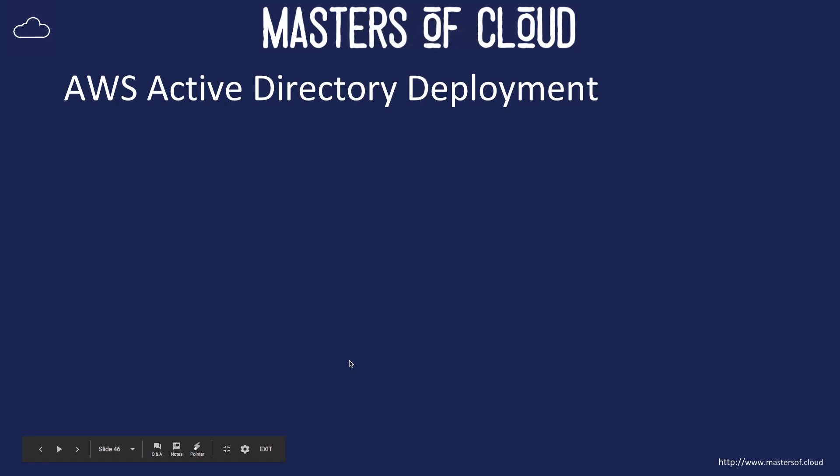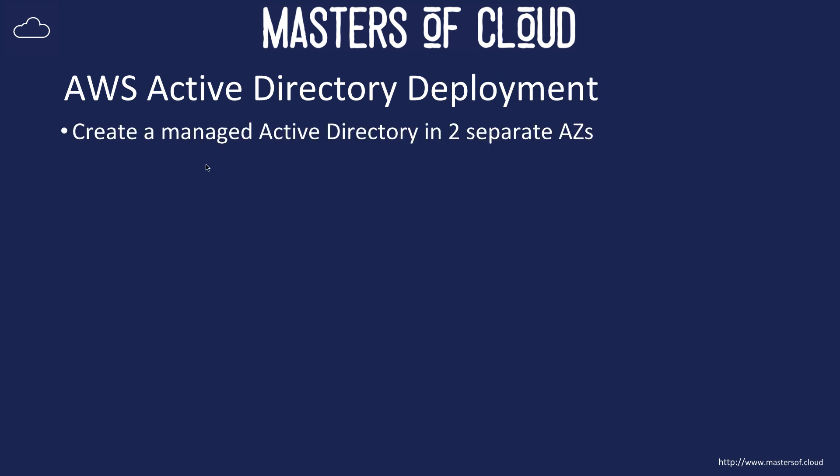Welcome to this video. We're going to step through the creation of an AWS Active Directory — one that is completely managed by AWS and locked down. You're given administrative access to a particular OU which you can manage, set up OUs and users, but otherwise the majority of Active Directory is delivered as a service.